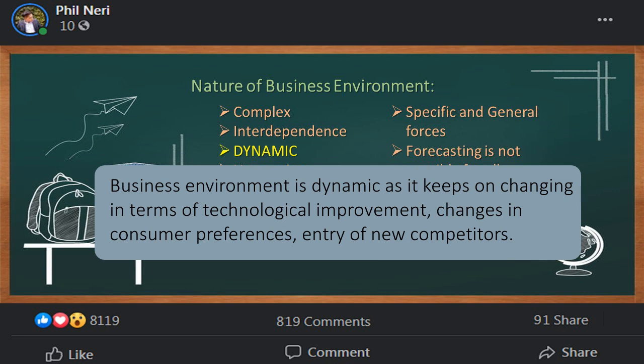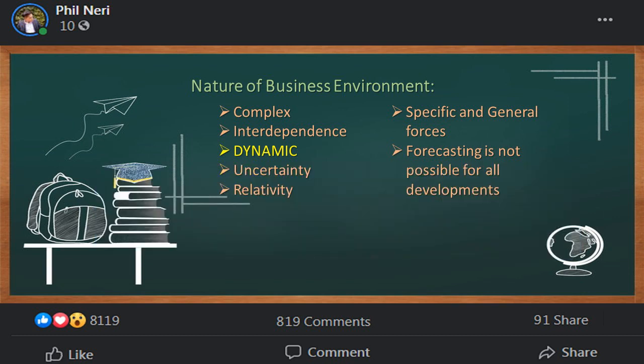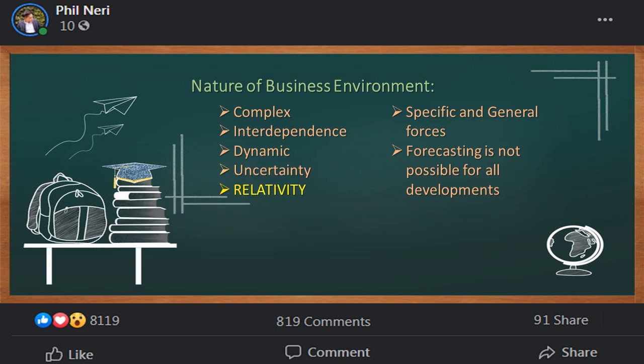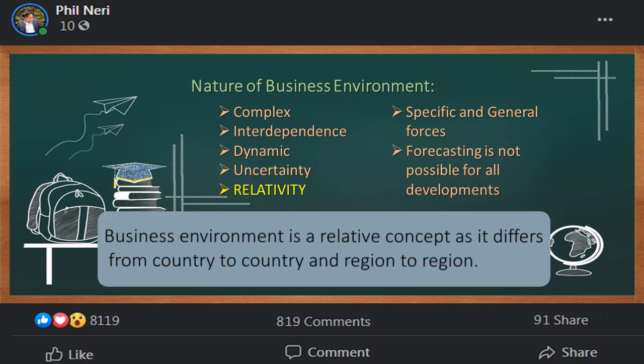Dynamic also includes changes in consumer preferences and the entry of new competitors. Uncertainty means business environment is largely uncertain as it is very difficult to predict future happenings. Relativity means business environment is a relative concept as it differs from country to country and region to region.